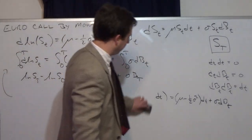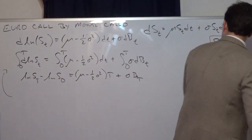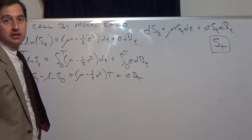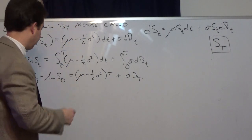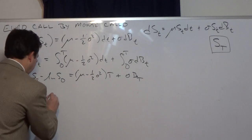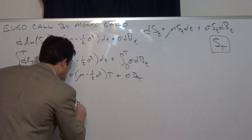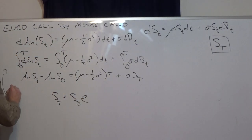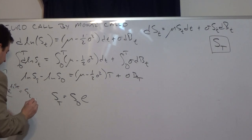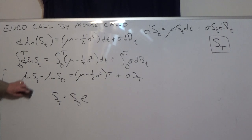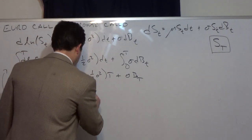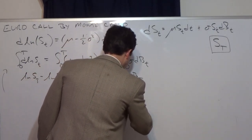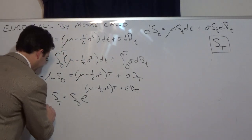We're almost there — we almost have S_T. Moving ln(S_0) to the other side and raising both sides to the power of e, using the fact that e to the ln(S_T) equals S_T, this gives us S_T equals S_0 times e to the power of (mu minus one-half sigma squared) T plus sigma B_T. This is what we want — the stock price at time T.